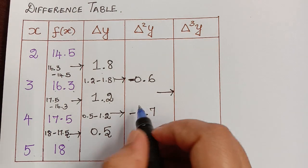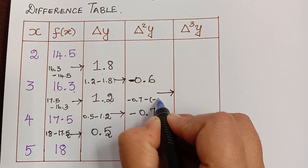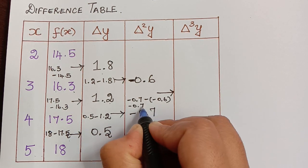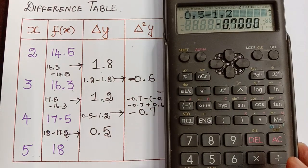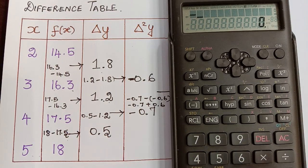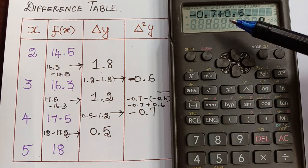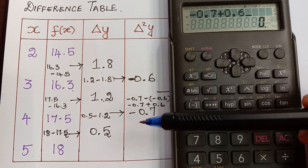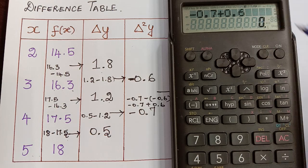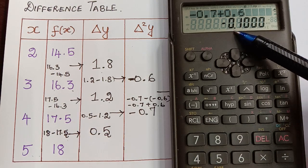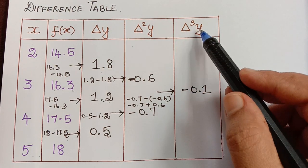Finally, we write the third difference, which is minus 0.7 minus of minus 0.6. Minus of minus becomes plus, so it is like minus 0.7 plus 0.6, which equals minus 0.1. So the third difference, delta cube of y, is minus 0.1. We have arrived at one single value and the third difference column is complete.